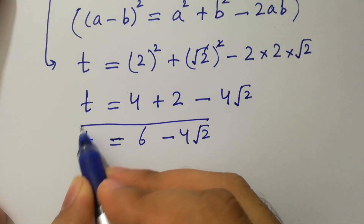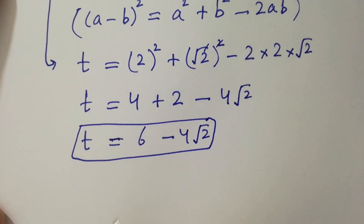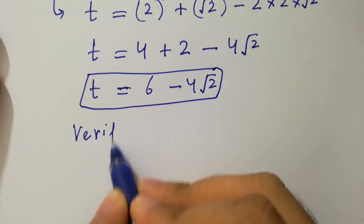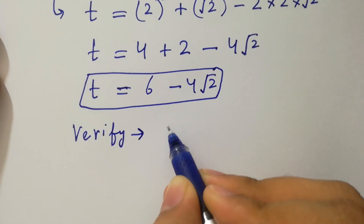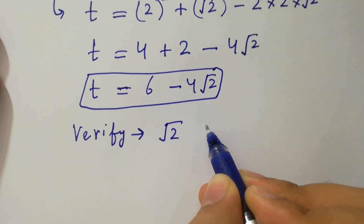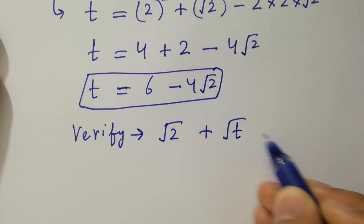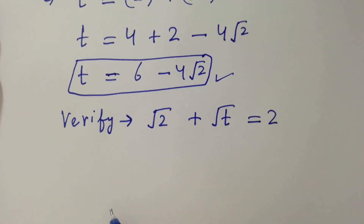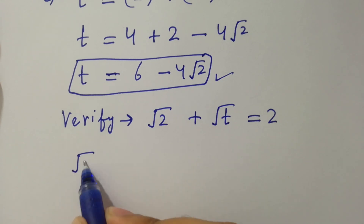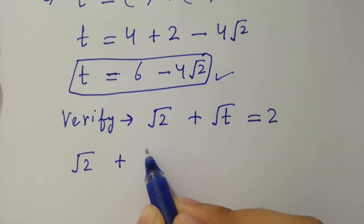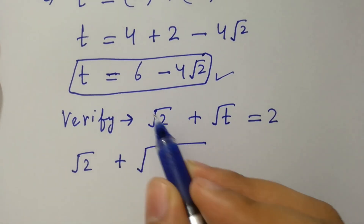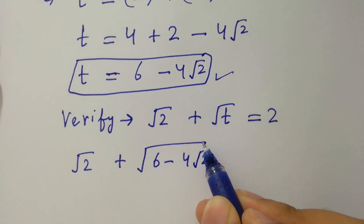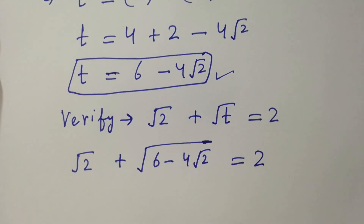That is the value of t. In the next step, I am going to verify: square root of 2 plus square root of t equals 2. Put the value of t — we have square root of 2 plus square root of 6 minus 4 square root of 2 equals 2.